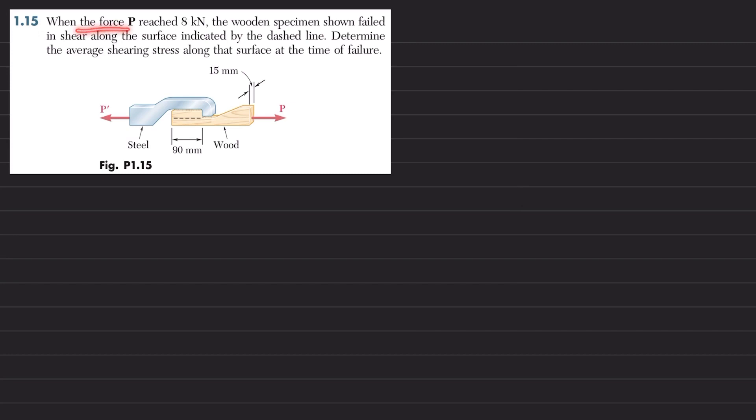The problem states: when the force P reached 8 kN, the wooden specimen failed in shear along the surface indicated by the dashed line. Determine the average shearing stress along that surface at the time of failure.